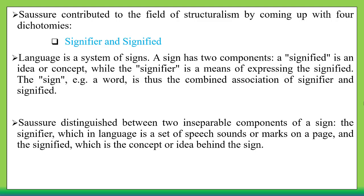What Saussure means by signifier and signified is that any word is the signifier, and its meaning — the concept internalized in our mind — is the signified. So the word or symbol is the signifier, and its meaning is the signified.